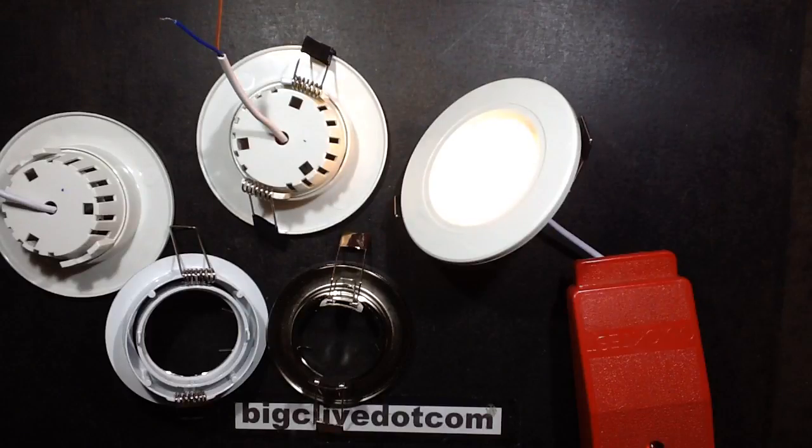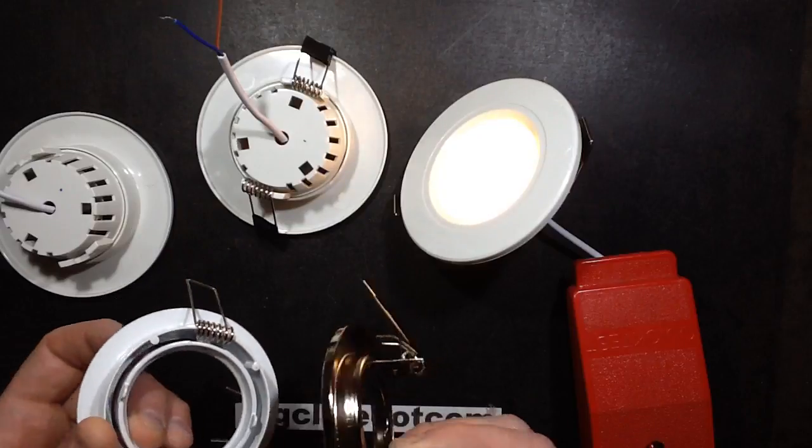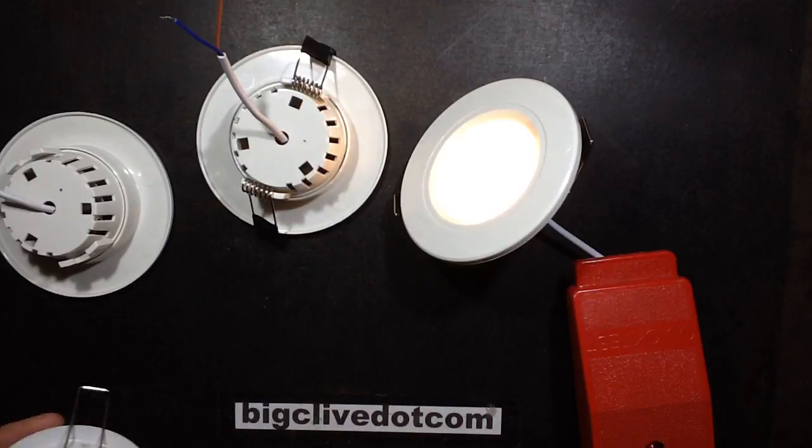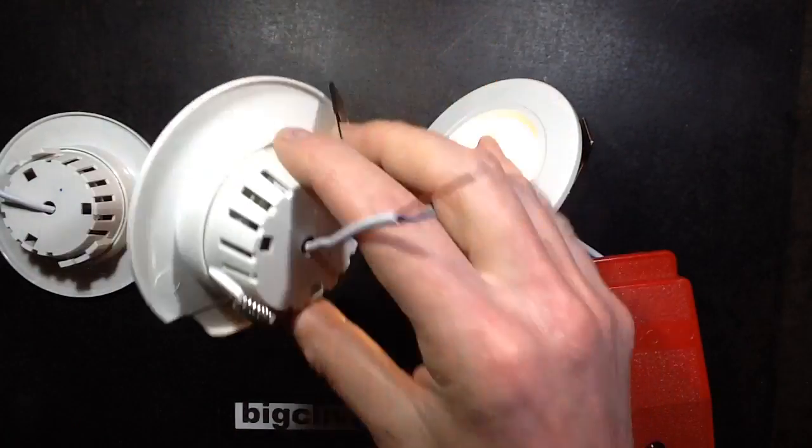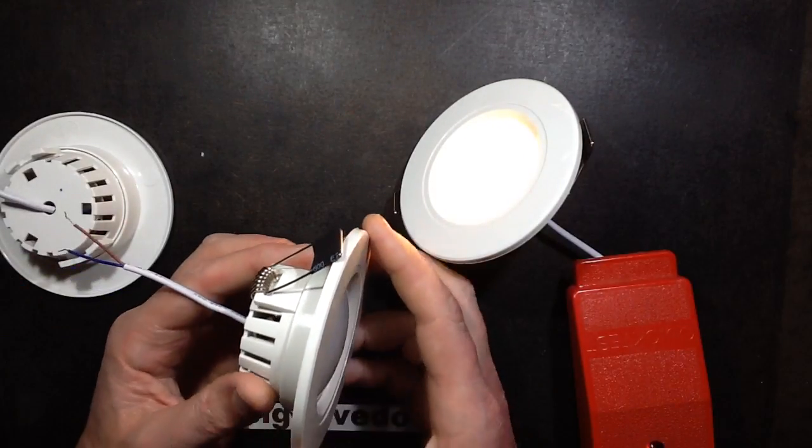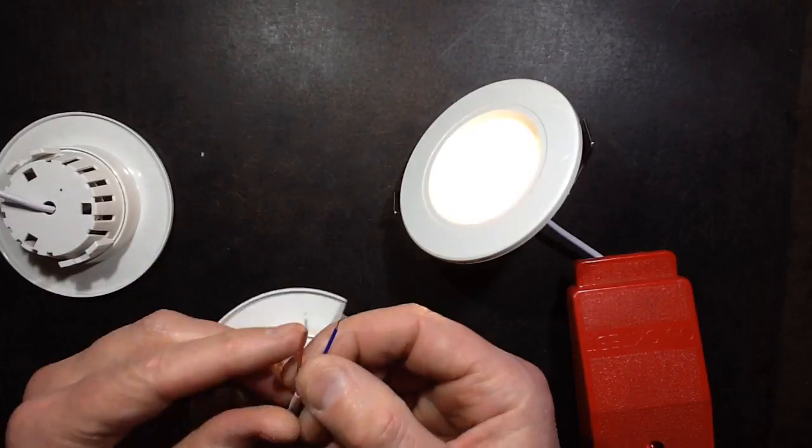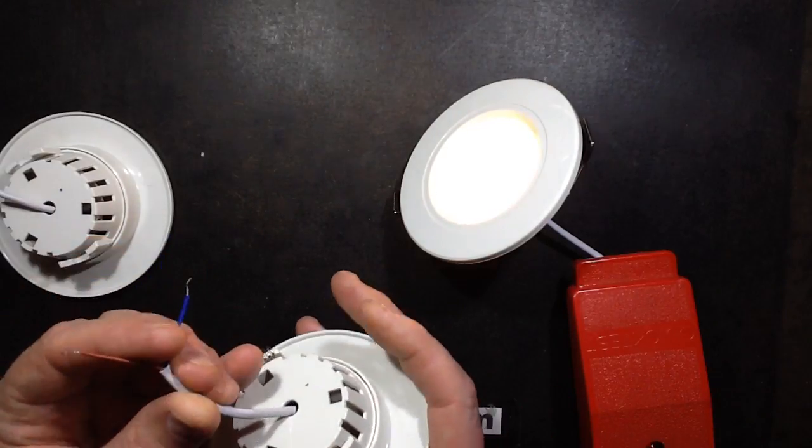These are an interesting twist on downlights. Instead of using a standard downlight frame and putting something like a GU10 lamp in, these little lights operate directly at 240 volts. Initially I thought they were going to be the typical low voltage downlight with a little circuit module and a little in-line power supply, but they're not.